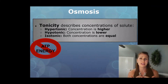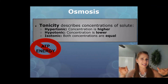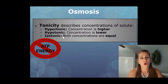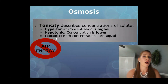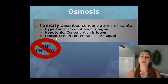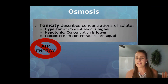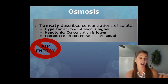Your goal is isotonic. But a lot of times your cells may be in a hypertonic or hypotonic environment and have to fix that in order to get to isotonic. No ATP energy is being used during any of these processes — this is not requiring energy at all. We will talk about when energy is used in a future lesson, and that will be for active transport.